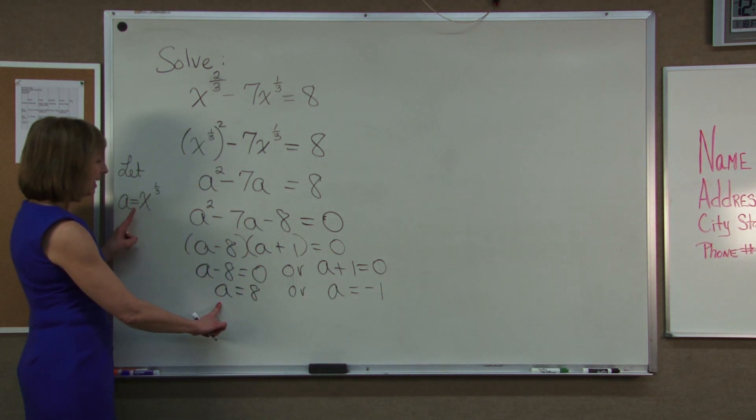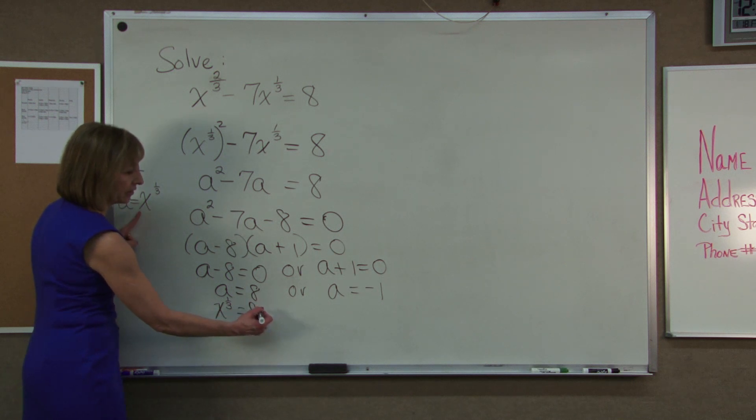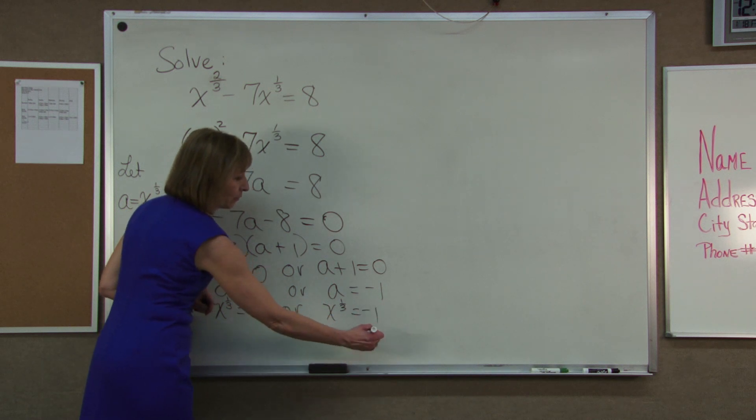Now remember, a is x to the 1 third. So I have really that x to the 1 third is equal to 8 or x to the 1 third is equal to negative 1.